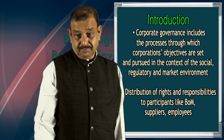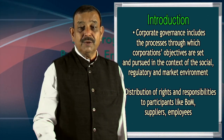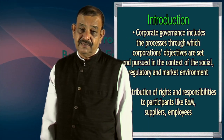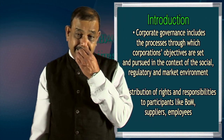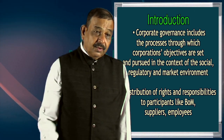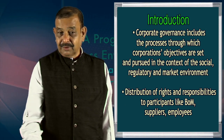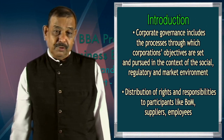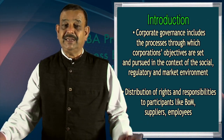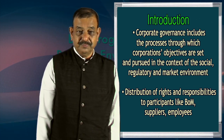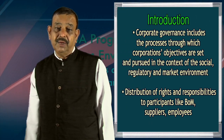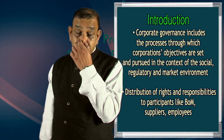This includes processes like tendering and procurement of goods — how tenders are floated, whether notices were given and properly processed. It basically includes the processes through which corporations' objectives are set and pursued in the context of the social, regulatory, and market environment. Vigilance — such as the resilience awareness week held every end of October or beginning of November for public sector organizations — ensures that good practices prevail in an organization, meeting the requirements of both the regulatory and market environment.